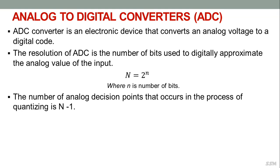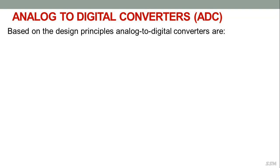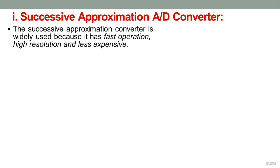The number of analog decision points in the quantizing process is N minus 1. The analog quantization size Q is defined as the full scale range of the ADC divided by the number of output states. Based on design principles, analog to digital converters are classified as: successive approximation, flash or parallel encoding, single slope integration, and dual slope integration.